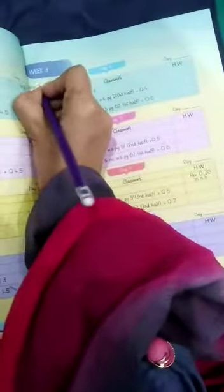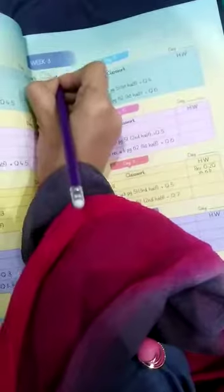Now open your math book, mathematics. Today your planner is, yes it is, day 9. Date lagayenge 5th May 2020 and the day is Tuesday.